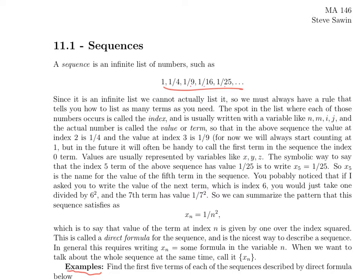I need to talk about some notation. The location of each number on the list is called its index. Usually when we refer to the index, we use numbers from the middle of the alphabet, like M, N, I, J. The actual numbers are called the value or the term. So in this sequence, the value at index one is one, the value at index two is a quarter, the value at index three is a ninth, and so on. For the time being, we'll start counting our index at one for sequences. Later on, it will often be handy to start counting the index at zero.